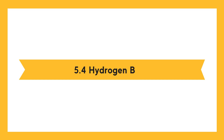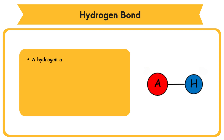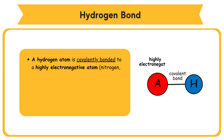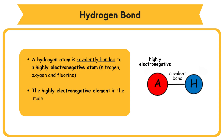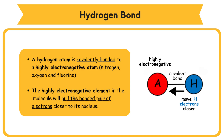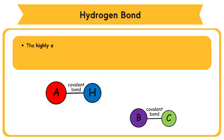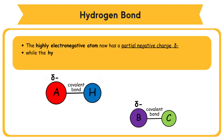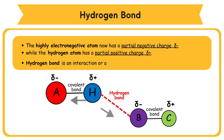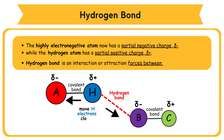A hydrogen bond is formed when a hydrogen atom is covalently bonded to a highly electronegative atom, such as nitrogen, oxygen, and fluorine. The highly electronegative element in the molecule will pull the bonded pair of electrons closer to its nucleus. The highly electronegative atom now has a partial negative charge, while the hydrogen atom has a partial positive charge. Hydrogen bond is an interaction or attraction force between dipole molecules.